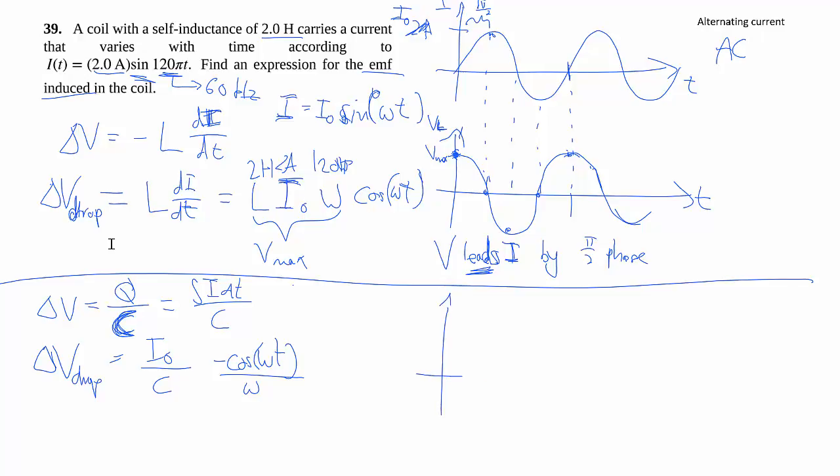If we graph that out, so this is V_C now, some V_max that number-wise I'm not going to care but that's V_max right there. But it's negative cosine, so it looks like this.